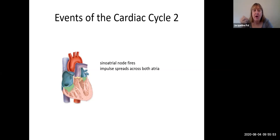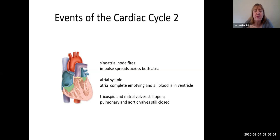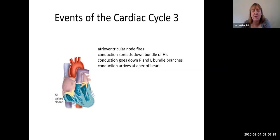What happens first is the sinoatrial node fires and the impulse spreads across both atria, causing atrial systole — both atria contract and completely empty any blood in them into the ventricles. So all blood in the heart is now going to be in the ventricles. Notice the tricuspid and mitral valves are still open and the pulmonary and aortic valves are still closed.